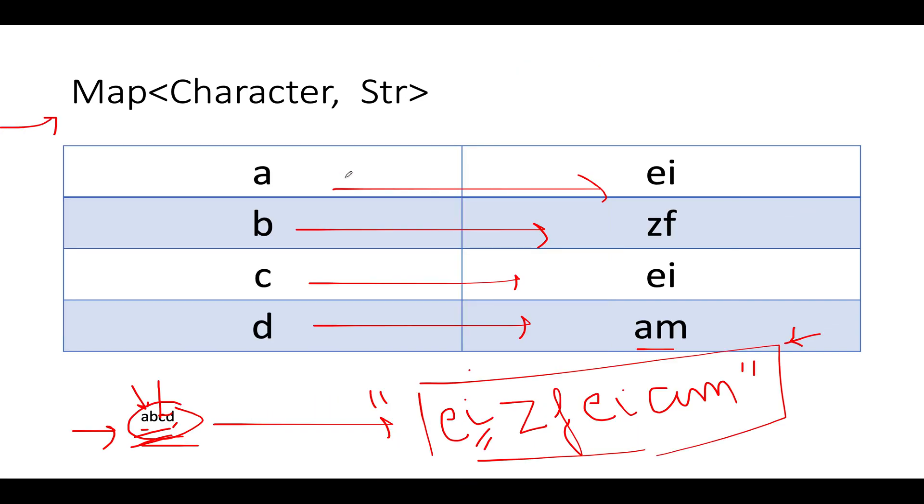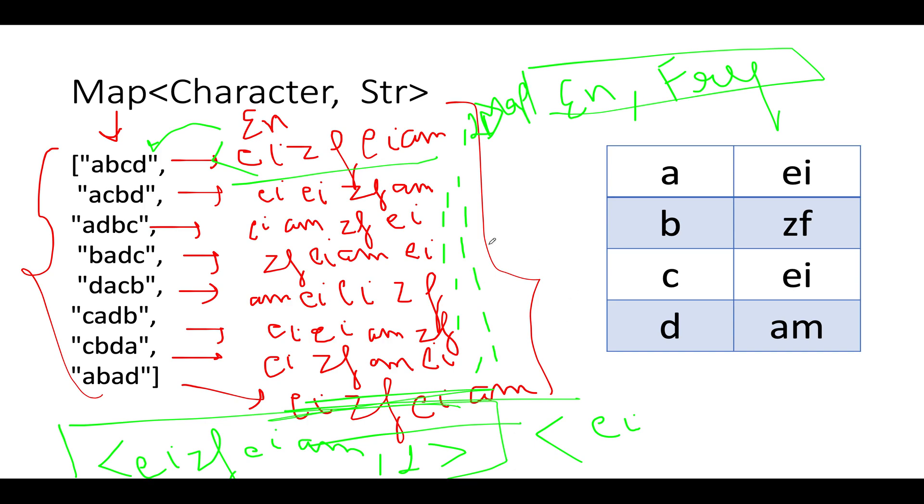And now comes the favorite part where we need to decrypt a particular string. What will I do? I will simply check whether the parameter passed word2 exists in my map or not. If it doesn't exist, I will return 0.